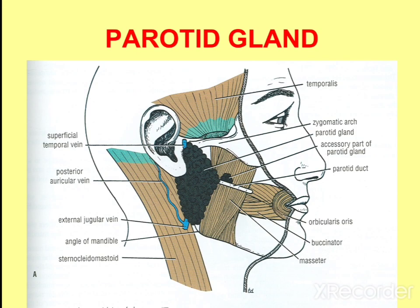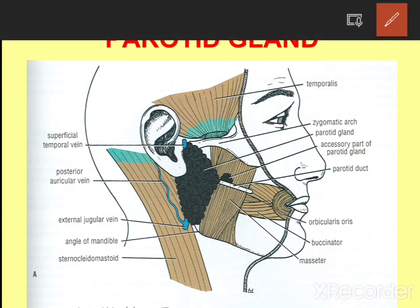Here we can see the extension of the parotid gland: above, it extends up to the zygomatic arch; below, up to the angle of the mandible; anteriorly up to the masseter; and posteriorly you have the auricle. So these are the relations or extensions of the parotid gland.